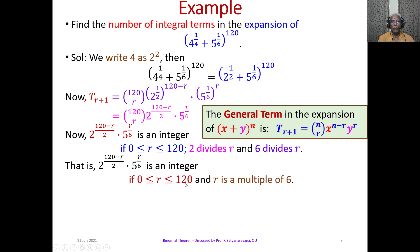So when this is possible, this implies 0 ≤ r ≤ 120 and r is a multiple of 6, which will give you r can take the values 0, 6, 12, 18, 24, etc., the last term 120.